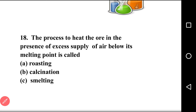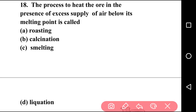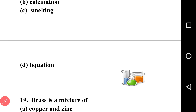Going to next question, question number eighteen: the process of heating ore in the presence of excess supply of air below its melting point is called? Options: roasting, calcination, melting, liquefaction. The answer is option A, roasting. Remember: heating in the absence of air is calcination; heating in the presence of air is roasting.